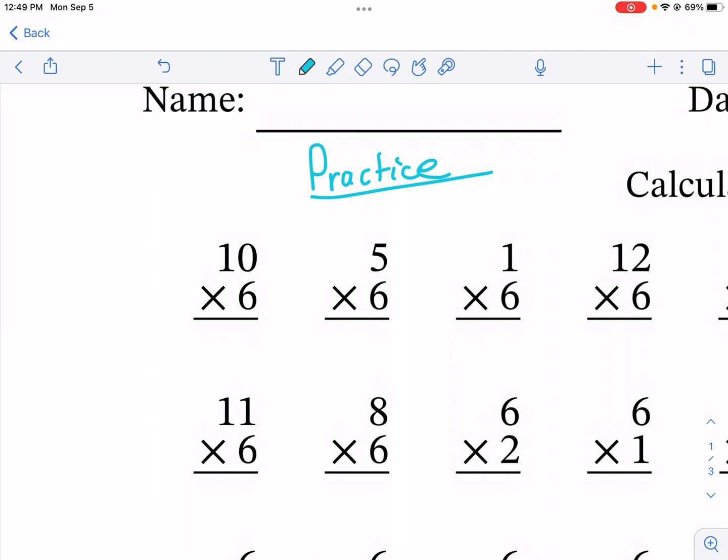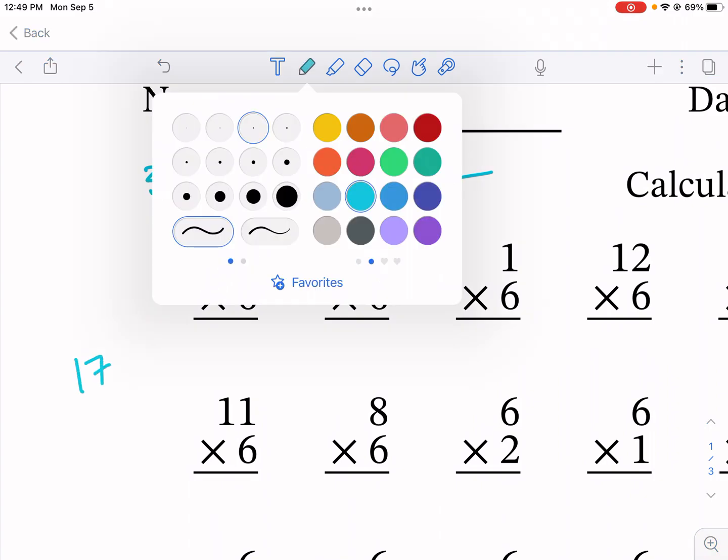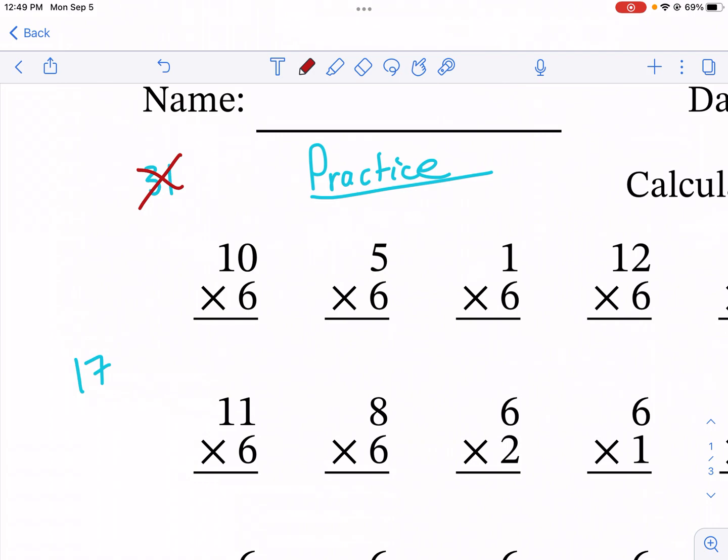So if you get an odd number in there like 31 or 17, then you messed up somewhere because these are incorrect answers. You're not gonna have any odd product for any of these multiplication facts for the sixes.